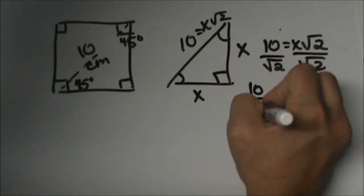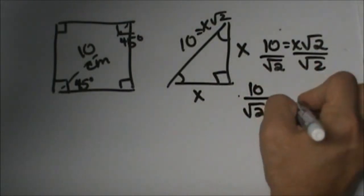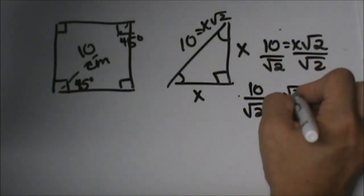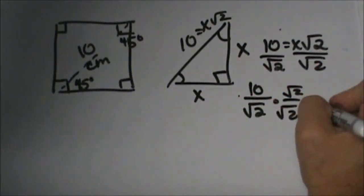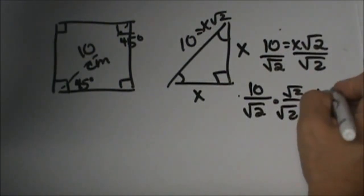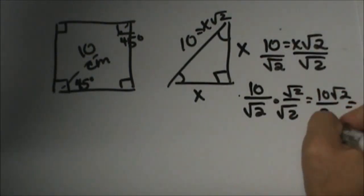10 divided by the square root of 2. I have to clear that radical out so multiply by root 2 over root 2. I get 2 on the bottom and 10 root 2 on top. Then simplify that to 5 square root 2.